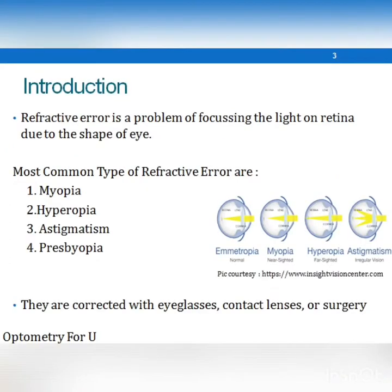Refractive error is a problem where light is not able to focus on the surface of the retina in an unaccommodated state of the eye. The most common types of refractive error are myopia, hyperopia, astigmatism, and presbyopia. They are usually treated with the help of spectacles, contact lenses, and surgery.